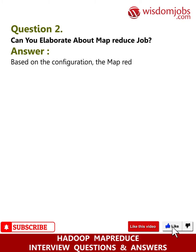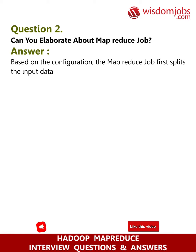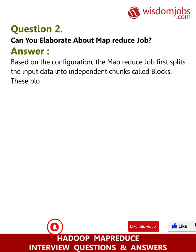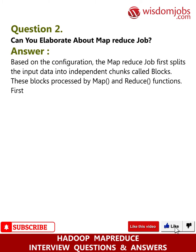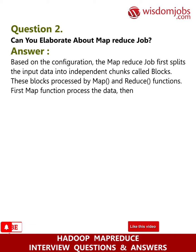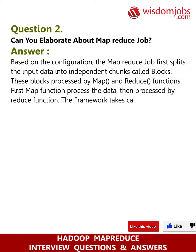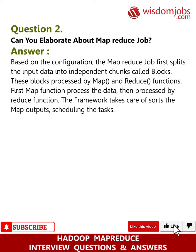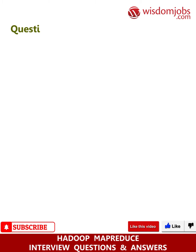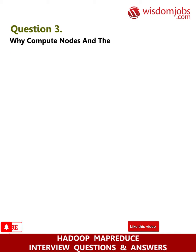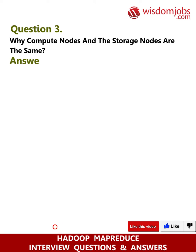Question 2: Can you elaborate about a MapReduce job? Answer: Based on the configuration, the MapReduce job first splits the input data into independent chunks called blocks. These blocks are processed by map and reduce functions. The map function processes the data first, then the reduce function processes it. The framework takes care of sorting the map outputs and scheduling the tasks.